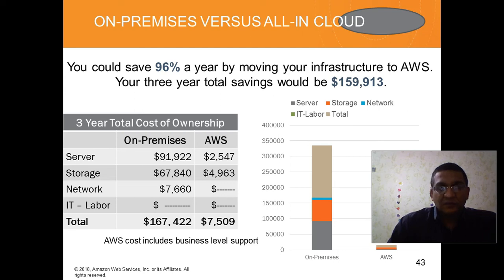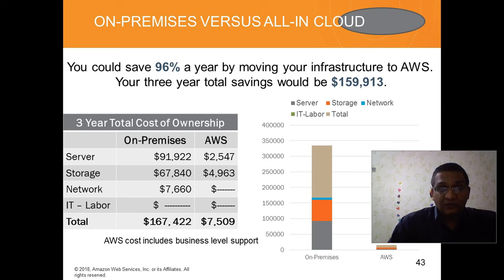Let's look at a simple cost comparison example. This example shows cost comparisons for the on-premises solution and the cloud solution over three years with the same kind of infrastructure required for the business. For this comparison, we have two similar environments — one on-premises and one on AWS. We assume one virtual machine with four CPUs, 16 GB of RAM, and a Linux operating system, with average utilization at 100%.